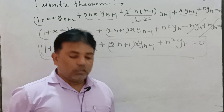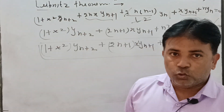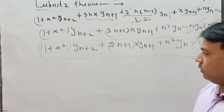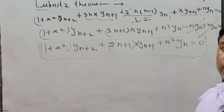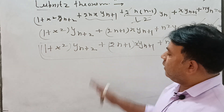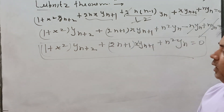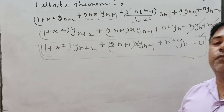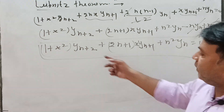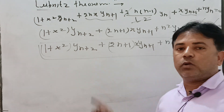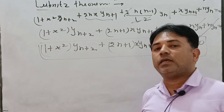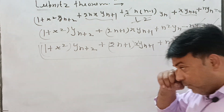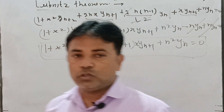Most important strategy for exam: first find the required number of derivatives before applying the Leibniz theorem. If the answer requires (n+2)th derivative, differentiate 2 times first. If it requires (n+1)th, differentiate 1 time first. If it requires (n+3)th, differentiate 3 times first. Then apply the Leibniz theorem. Very simple once you understand the pattern.